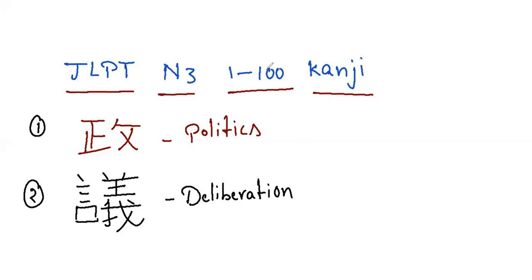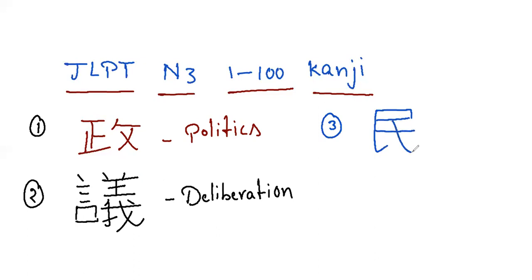Here is the third kanji. This is the kanji for people, nation, and subjects. It has five strokes. This is the kanji for people or nation.